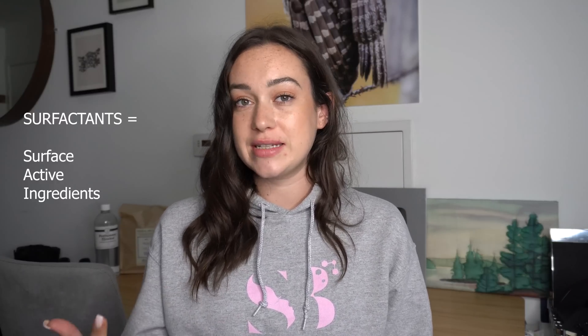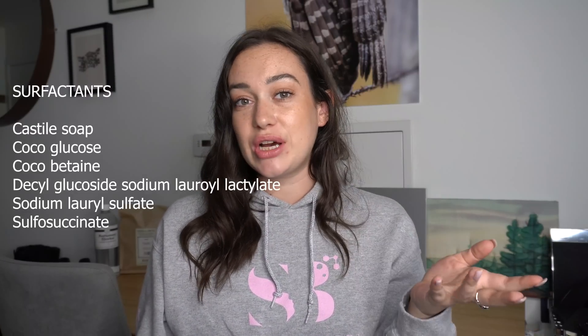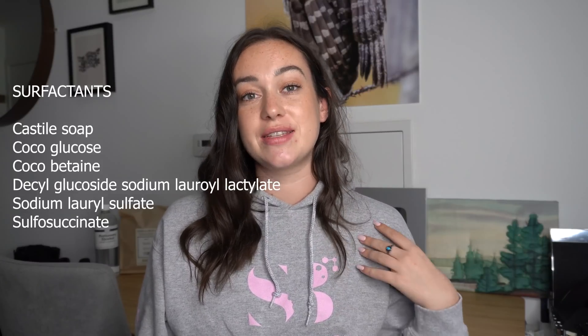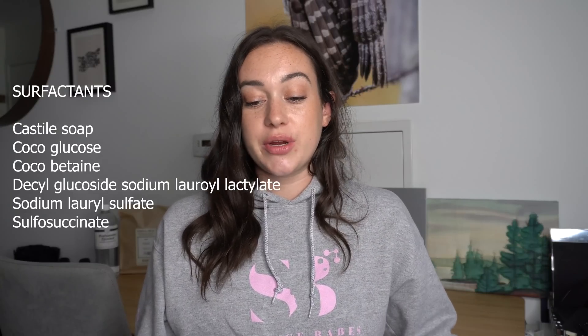Moving away from active ingredients, next I'll talk about surfactants — which stands for surface active ingredients. They cleanse and build foam at the interface between oil and water, grabbing both oil and water particles to emulsify and cleanse. Examples include regular soap, castile soap, and detergents such as cocobetaine, cocoglucose, decyl glucoside, sodium lauryl lactylate, sodium lauryl sulfate, and sulfosuccinate. You'll find these in cleansers, soaps, makeup removers, and shampoo.